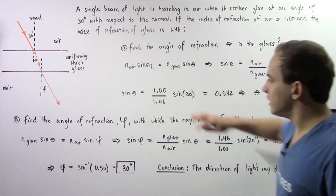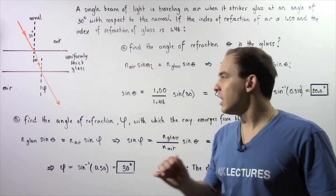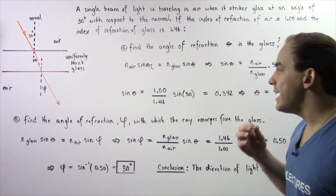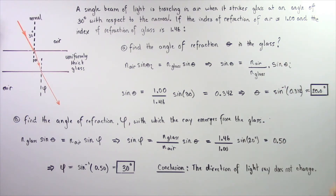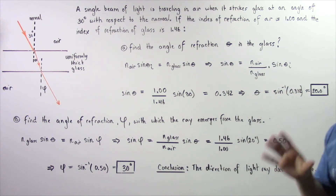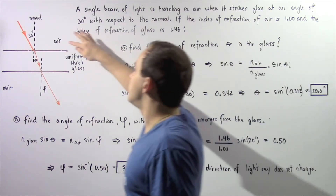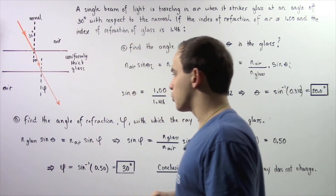Now to calculate what angle theta is, we simply apply the inverse sine function. So theta equals sine inverse of 0.342, which gives us about 20.0 degrees — which is less than our angle of 30 degrees, as expected.